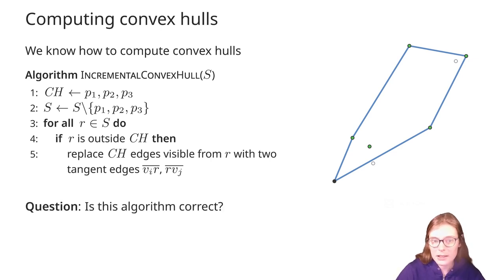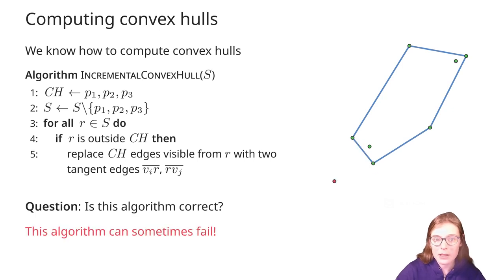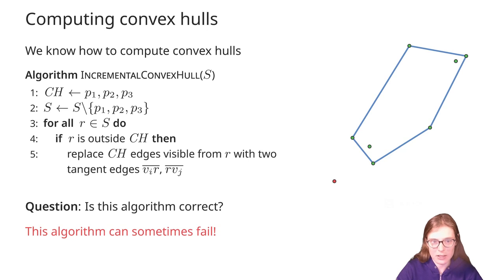After processing all points, we should end up with a correct convex hull. Is this indeed the case? Well, if we compute the edges of the convex hull visible from R correctly, and we compute the tangent edges correctly, then theoretically this algorithm is correct. But in practice, this algorithm can sometimes fail. For example, we may find that some points are left outside of a convex hull. How can this happen? Well, this is the topic of today's lecture.